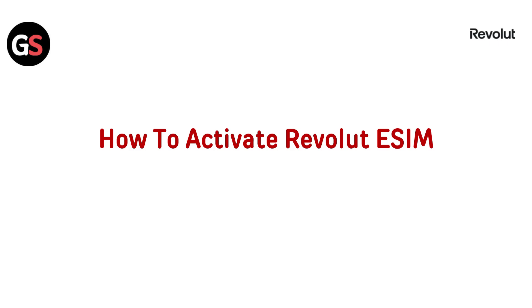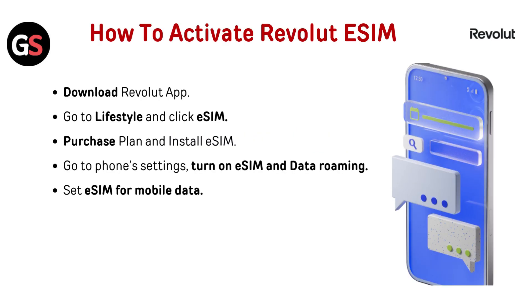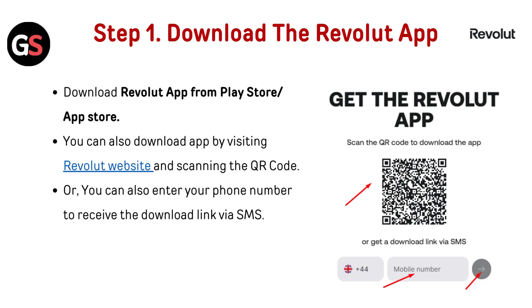Hi everyone, welcome back to the channel. In this video I'll guide you through the simple steps to activate your Revolt eSIM, whether you are using an iPhone or an Android device. To activate Revolt eSIM: download the Revolt app, go to Lifestyle and click eSIM, purchase a plan and install eSIM, go to phone settings, turn on eSIM and data roaming, and set eSIM for mobile data.